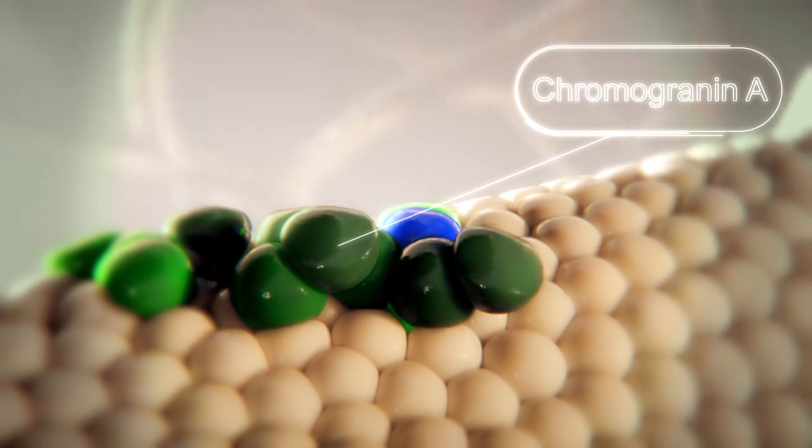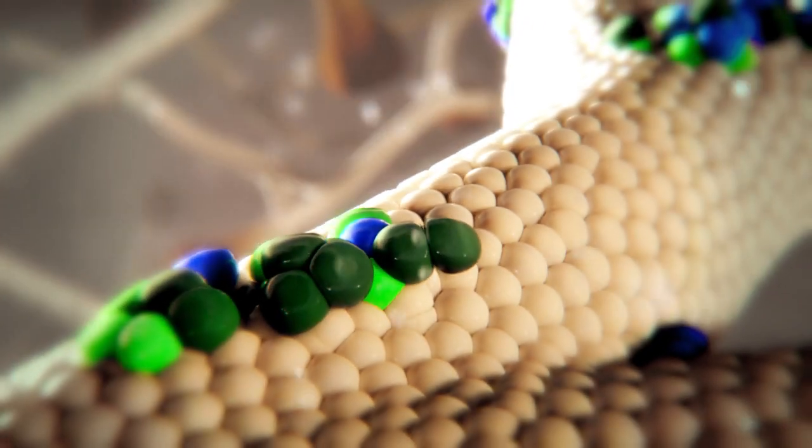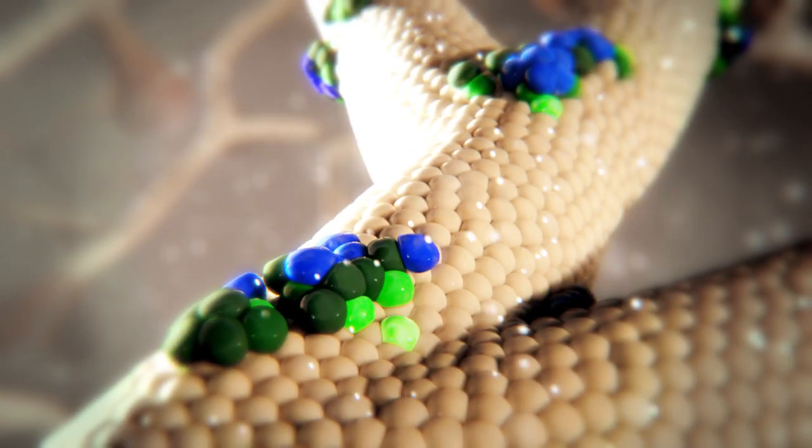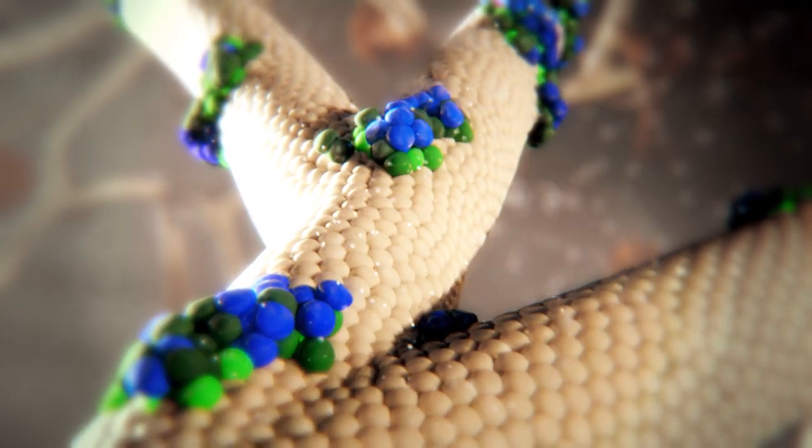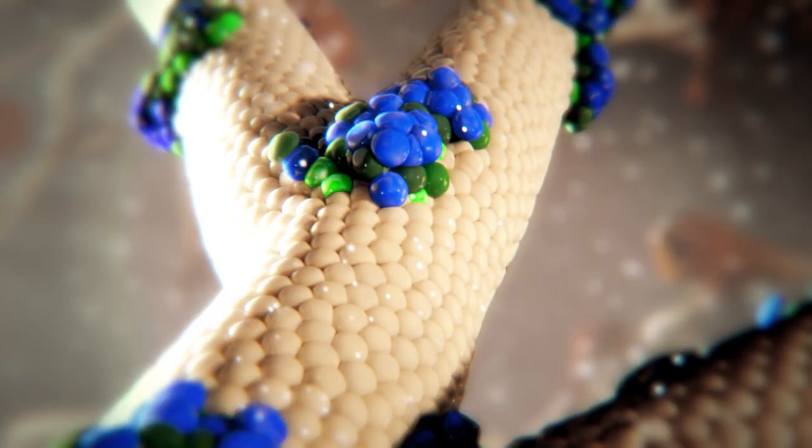Cells leaving the cords maintain cell-to-cell contacts. As more cells leave the cord, they push the earlier cells outward and form a peninsula, which will later form the islet.